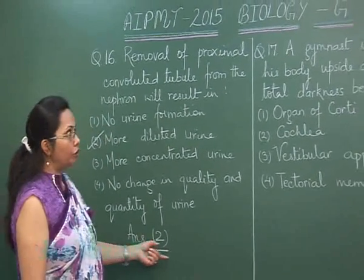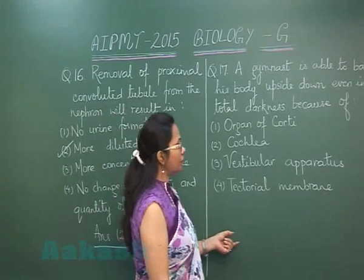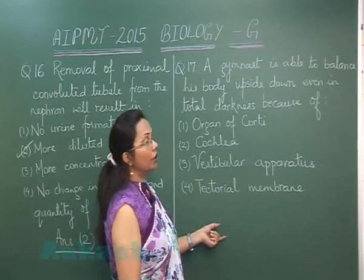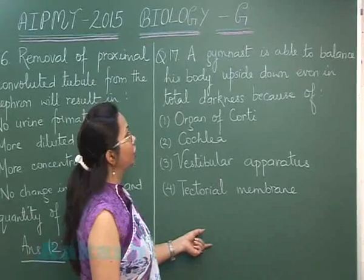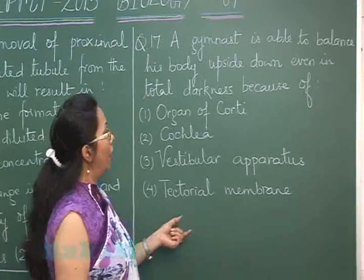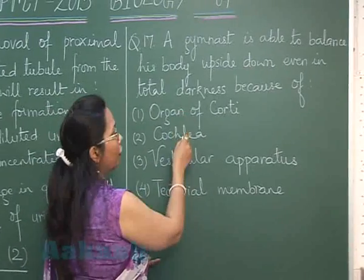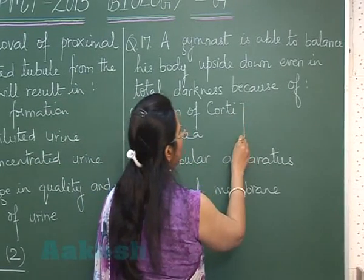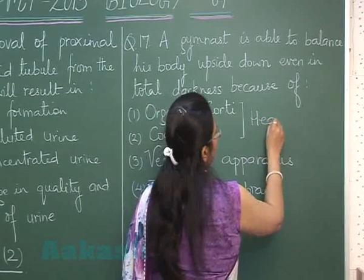Question number 17: A gymnast can balance his body even in a dark room upside down — because of what? Now, organ of Corti and cochlea are part of the internal ear and are concerned with hearing.